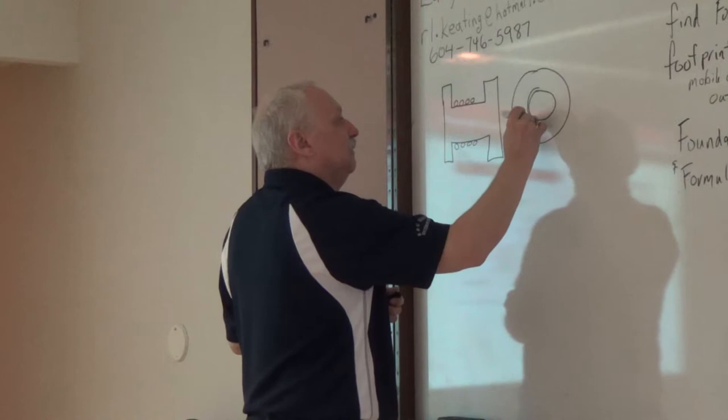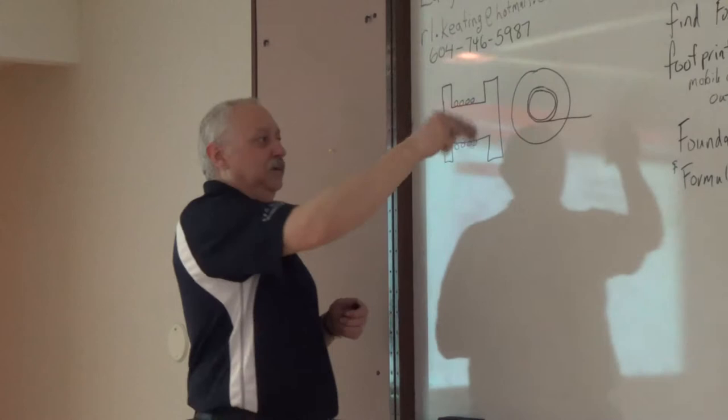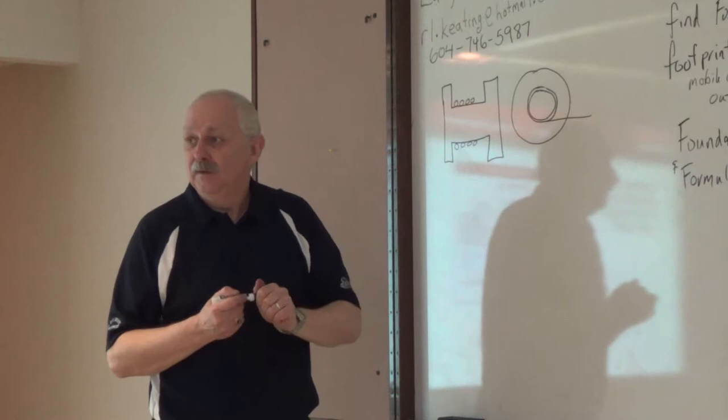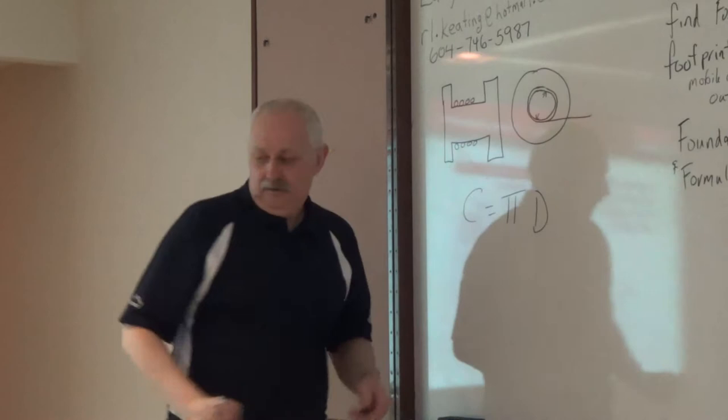Looking at the drum sideways, we have our cable on it. So we've got some wraps on that drum. What do we want to know about the cable and the drum? The circumference, exactly. So we want circumference equals pi times diameter.